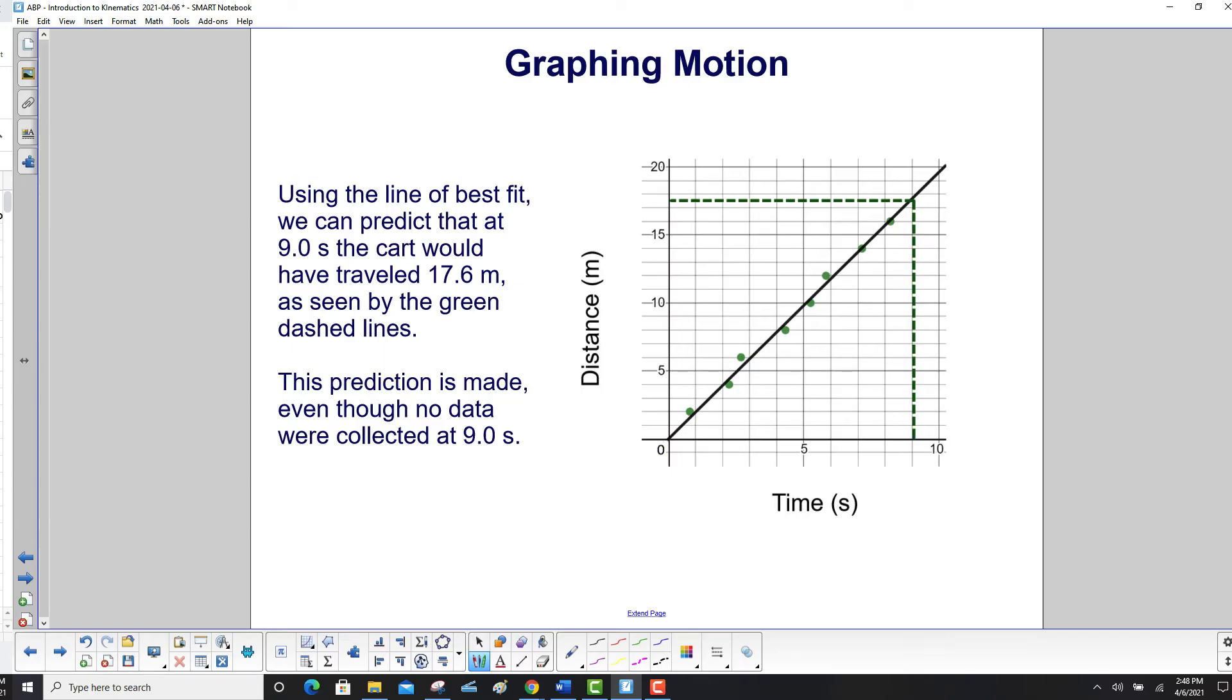Using the line of best fit, we can predict that at 9 seconds, the cart would have traveled 17.6 meters as seen by the dashed green lines. This prediction is made even though no data were collected at 9 seconds.